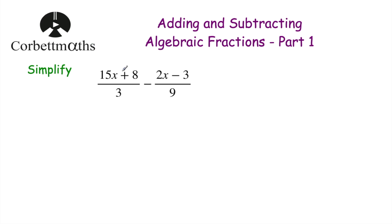Question number two: simplify (15x + 8)/3 − (2x − 3)/9. Here we're subtracting, so that's going to be important. The two fractions have got different denominators, so let's find a common denominator. Some people might think 27 because 3 times 9 is 27, but a much easier approach would be to just multiply both the numerator and denominator of the first fraction by 3, because that gives us 9 as the denominator.